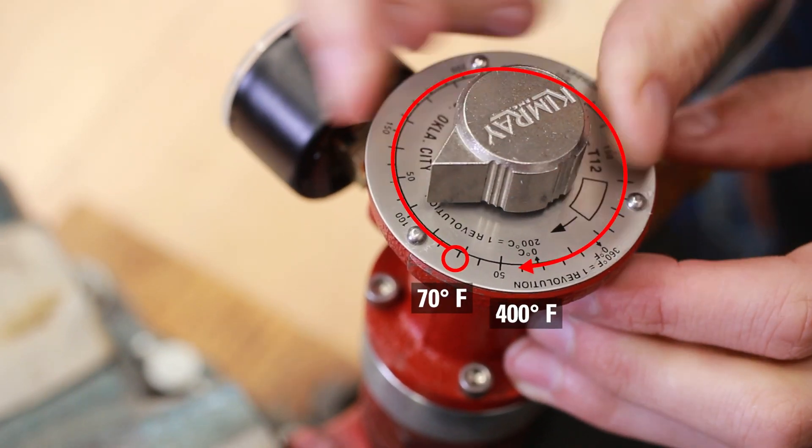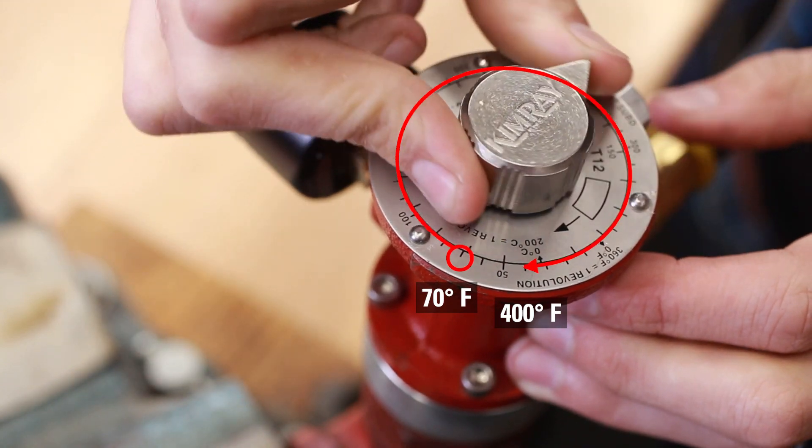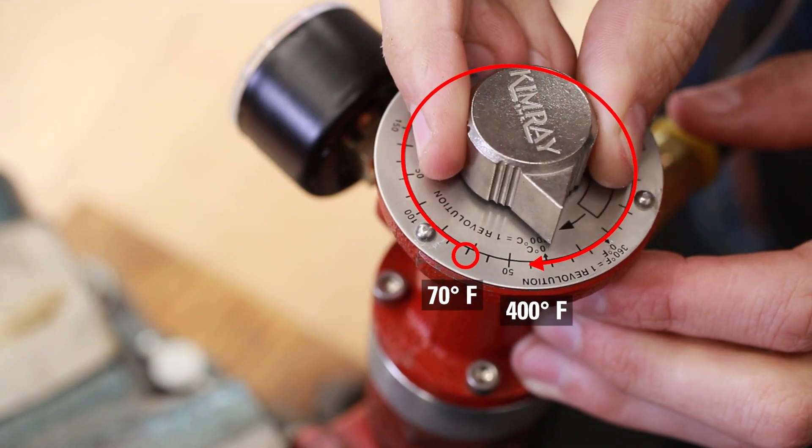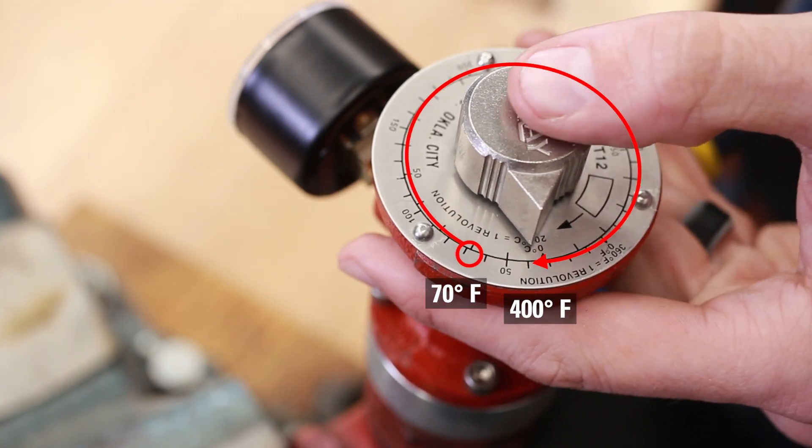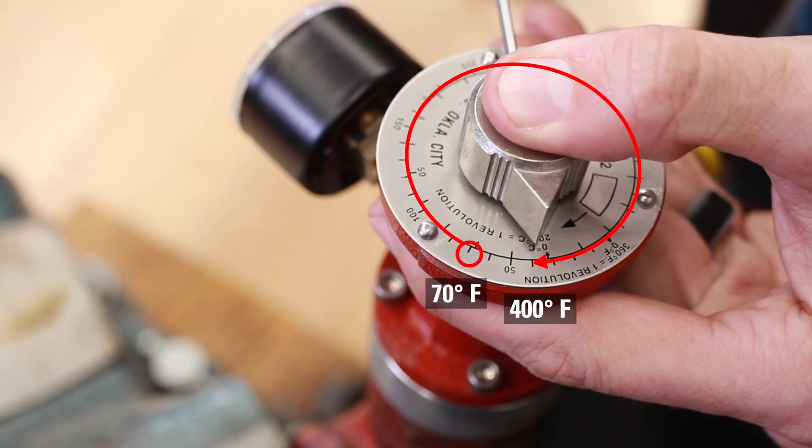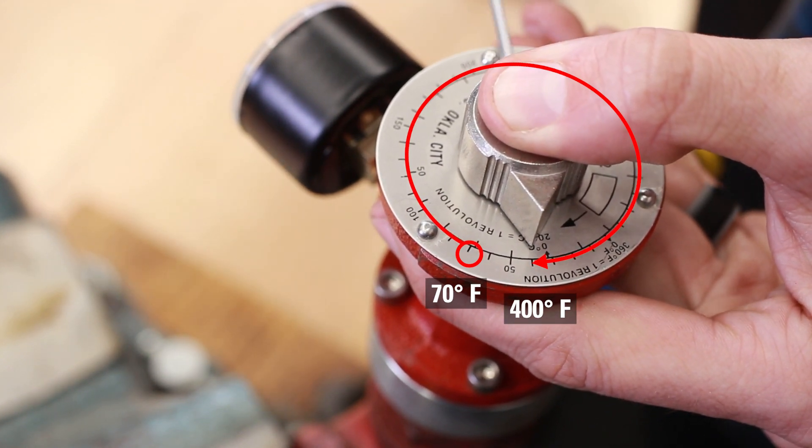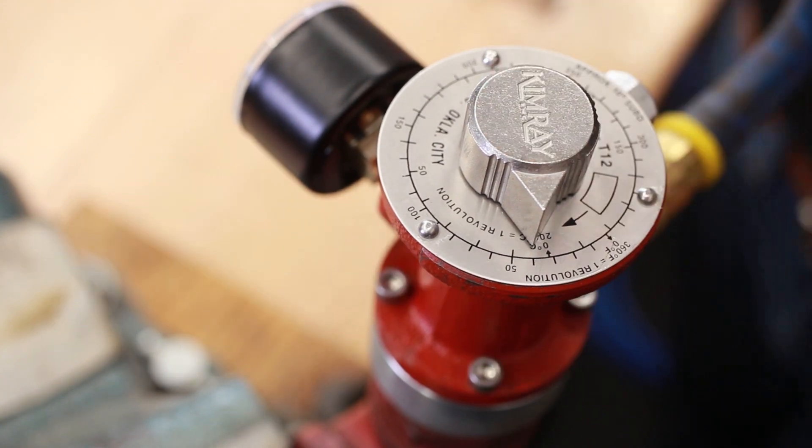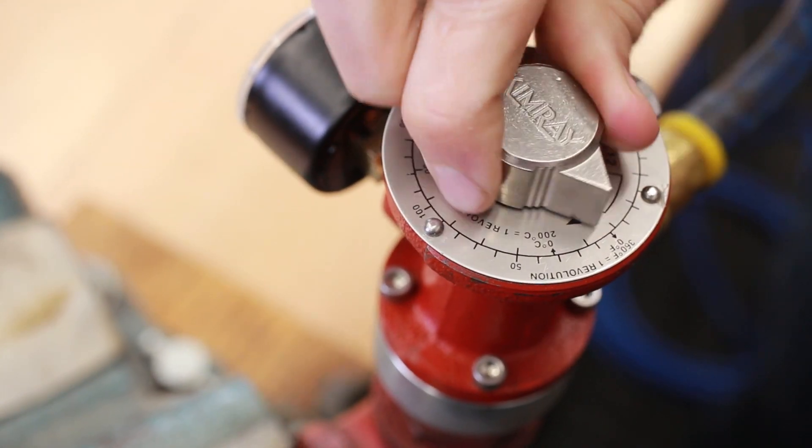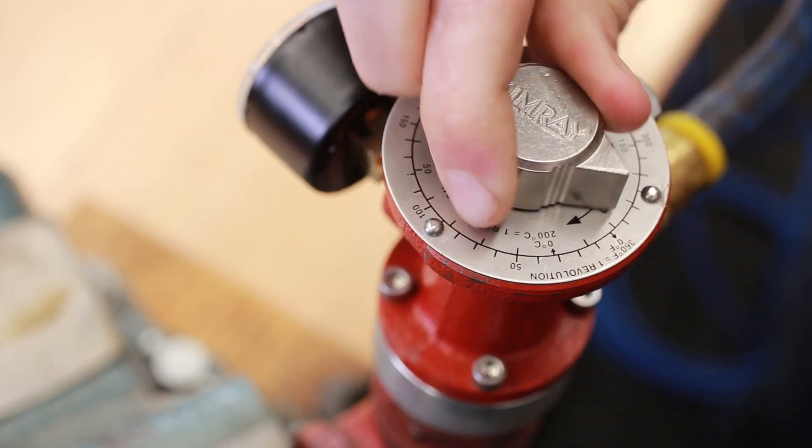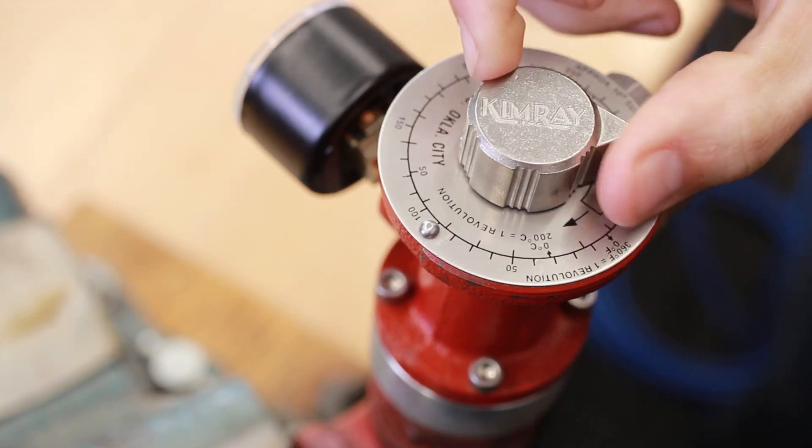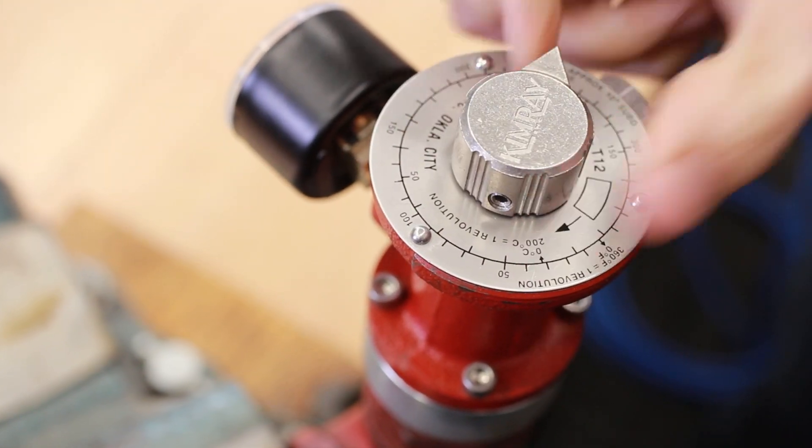The T12 is rated to 400 degrees Fahrenheit. This is the maximum set point you will ever control. After adjusting to 400 degrees Fahrenheit, loosen the set screw and push the adjustment knob all the way down. Then tighten the set screw back. The adjustment knob can now be moved to any desired temperature setting below the maximum set point. It cannot be adjusted any higher.